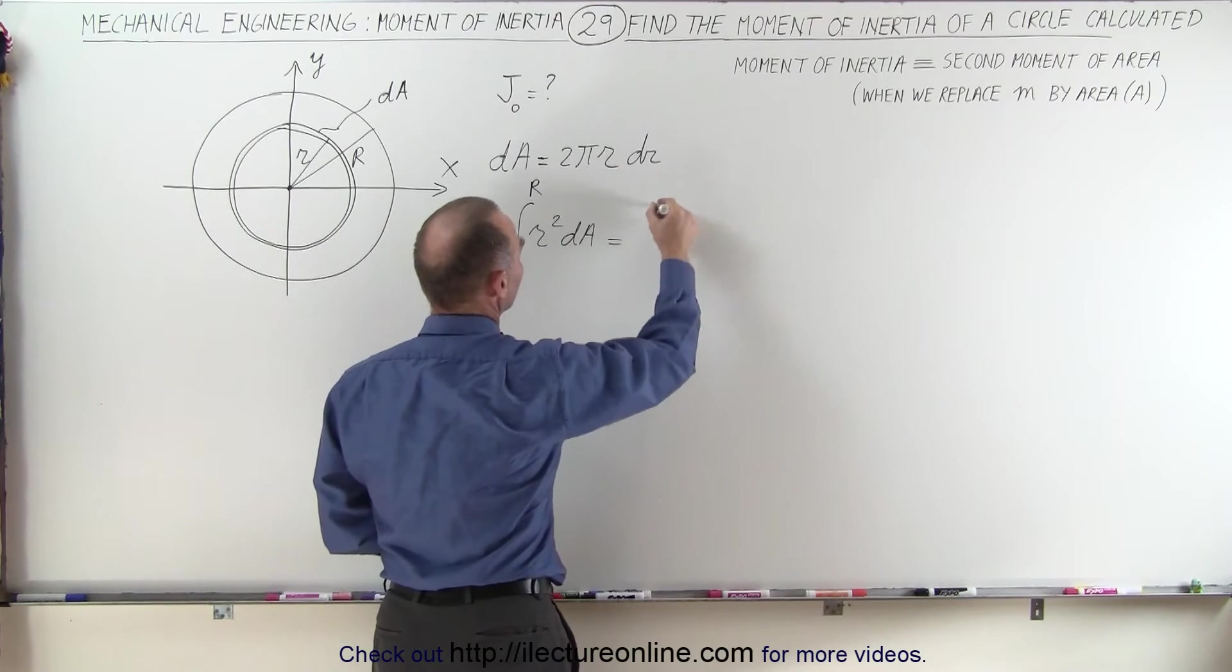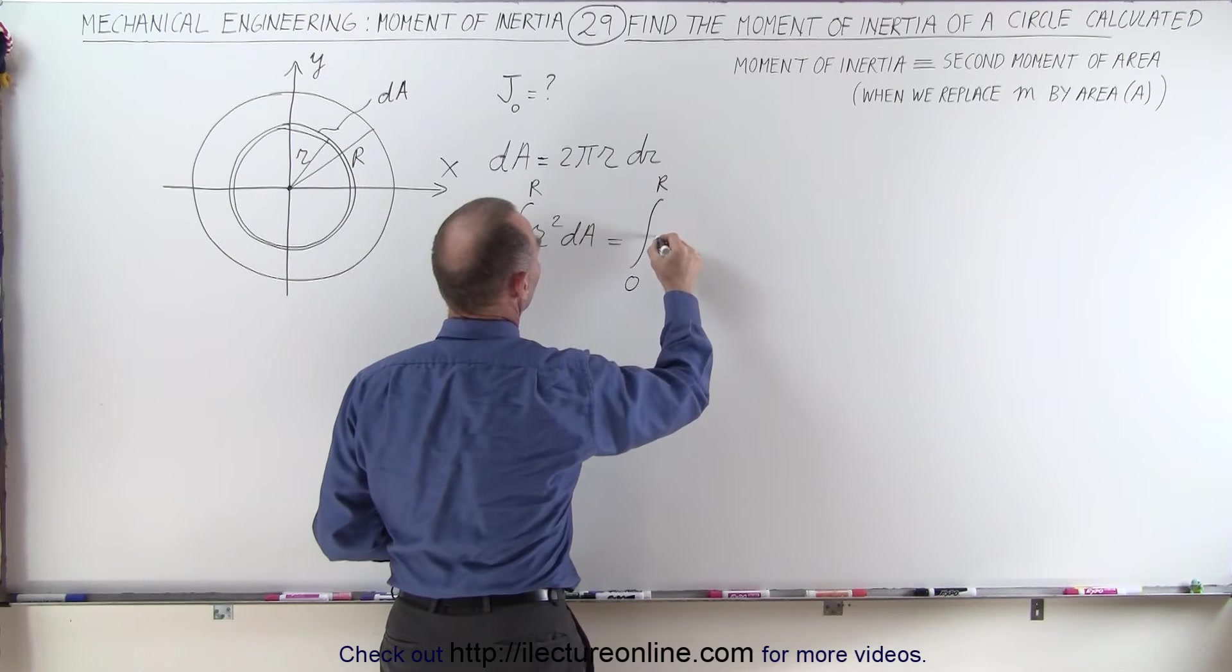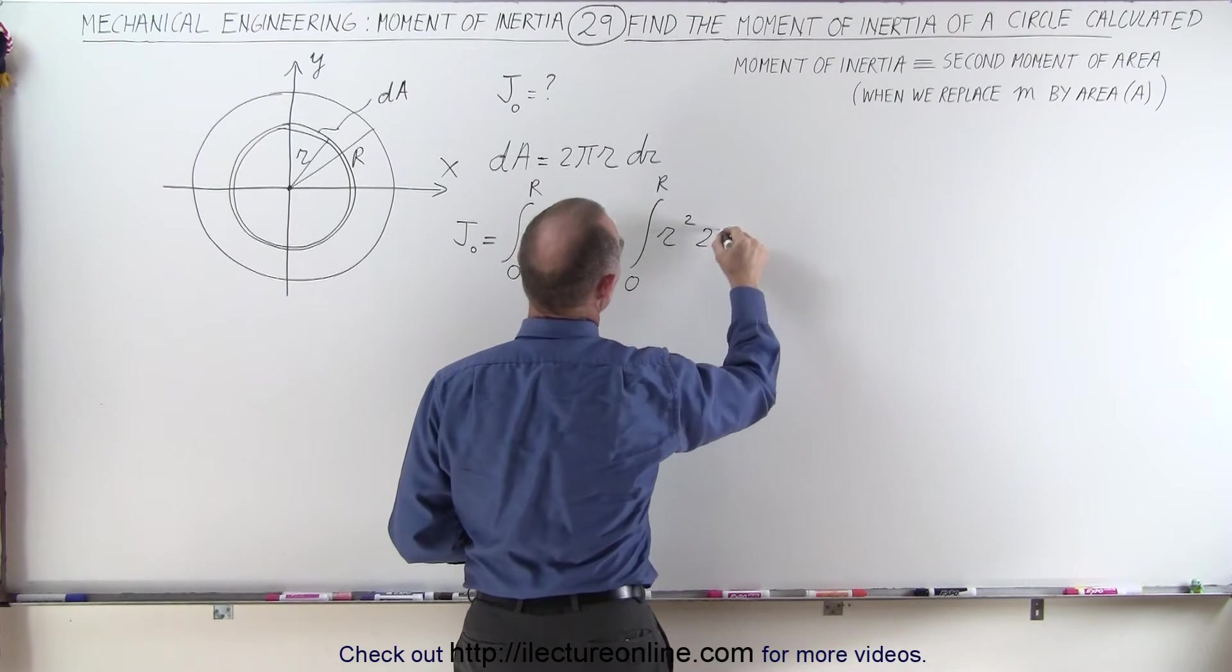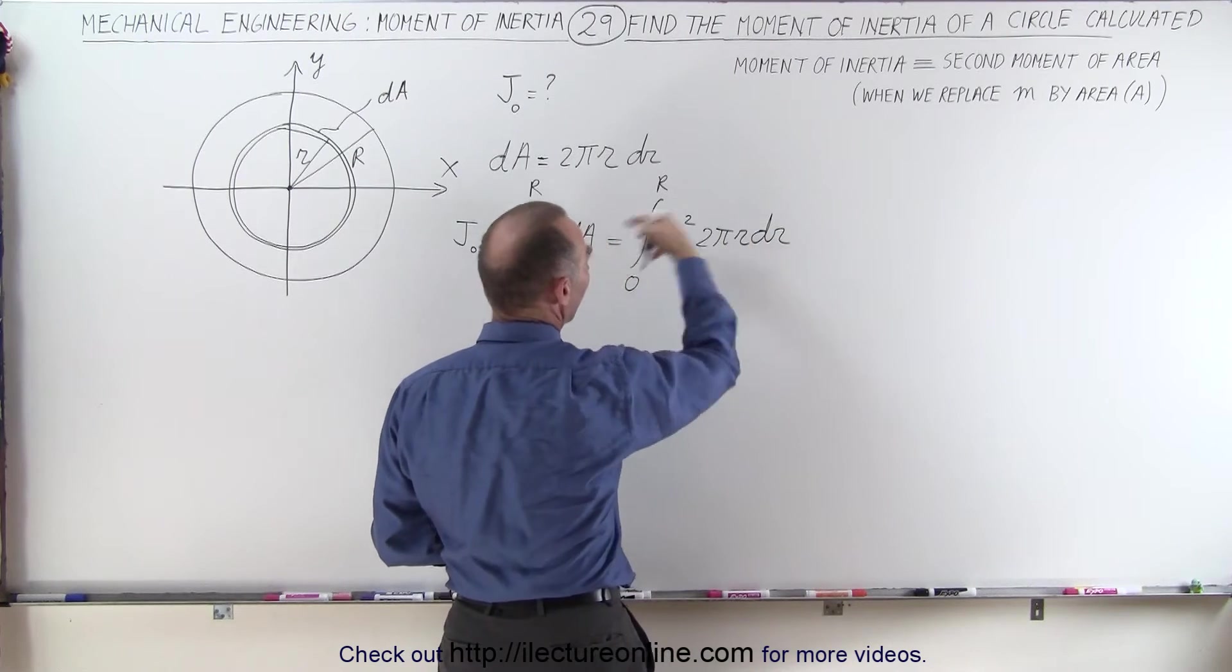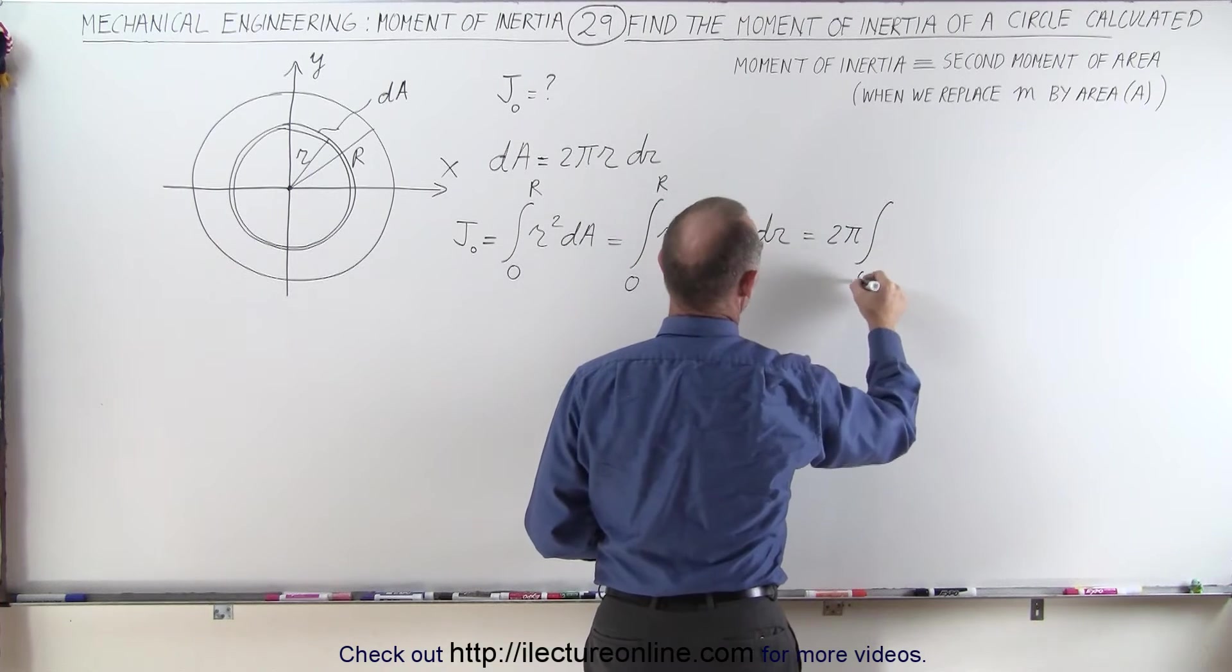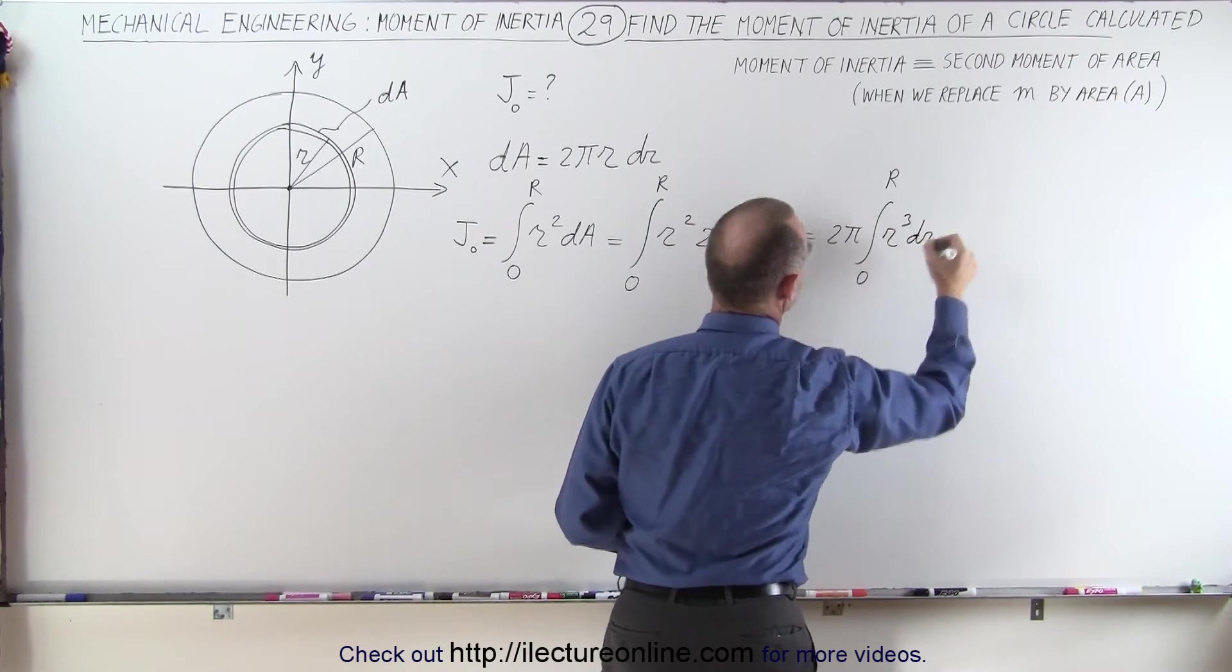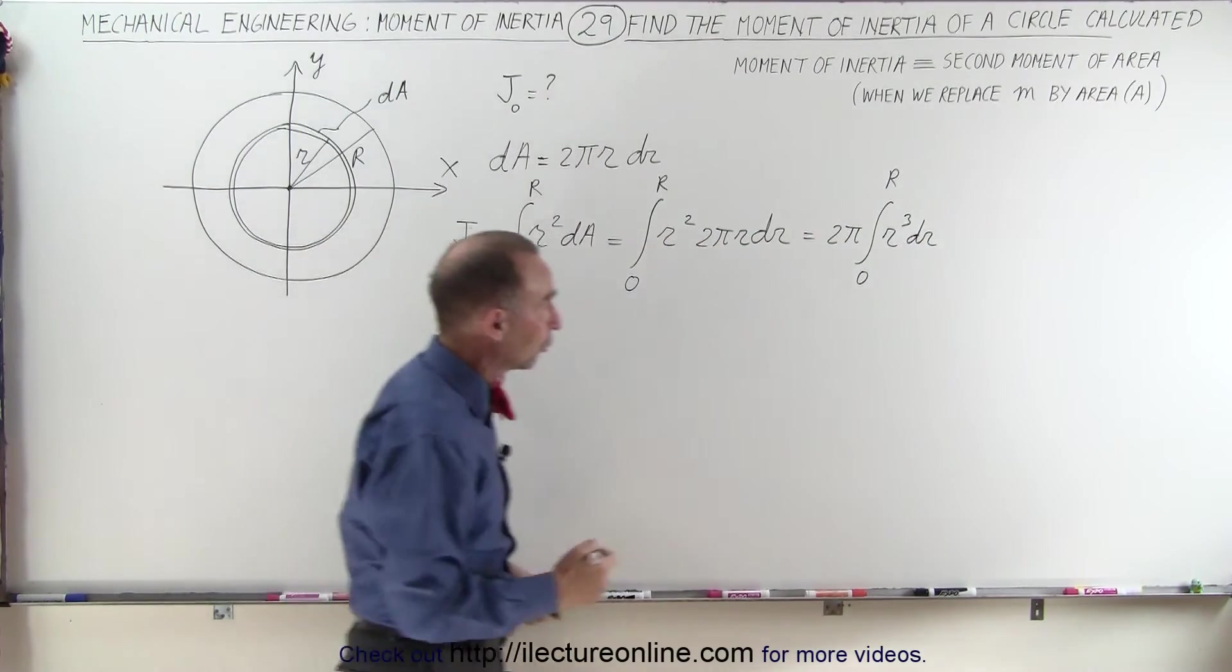So this then becomes equal to the integral from 0 to r. We have r squared, and DA is now going to be written as 2 pi r dr. We can pull the 2 pi outside integral sign. So this becomes equal to 2 pi times the integral from 0 to r of r cubed dr. And of course, that we can integrate rather easily. That becomes r to the 4th over 4.